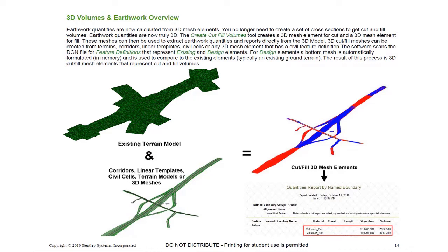The 3D cut fill meshes can be created from terrains, corridors, linear templates, civil cells, or any 3D mesh element that has a civil feature definition. The software scans the DGN file for feature definitions that represent existing and design elements. When a design element is encountered, a bottom mesh is automatically formulated in memory, so there's no longer a need to create a bottom mesh or a proposed terrain.